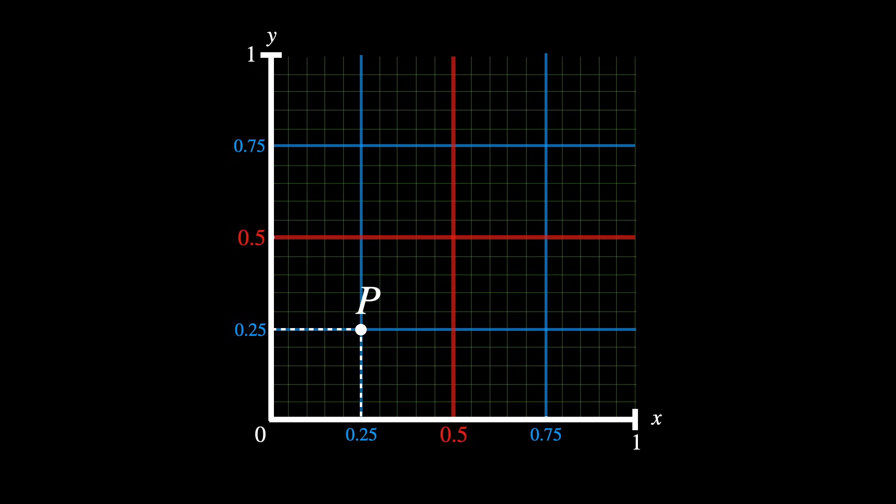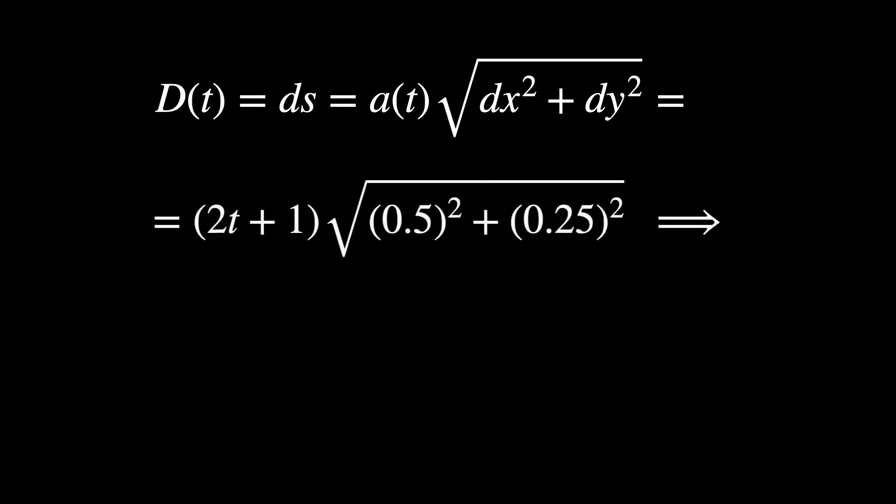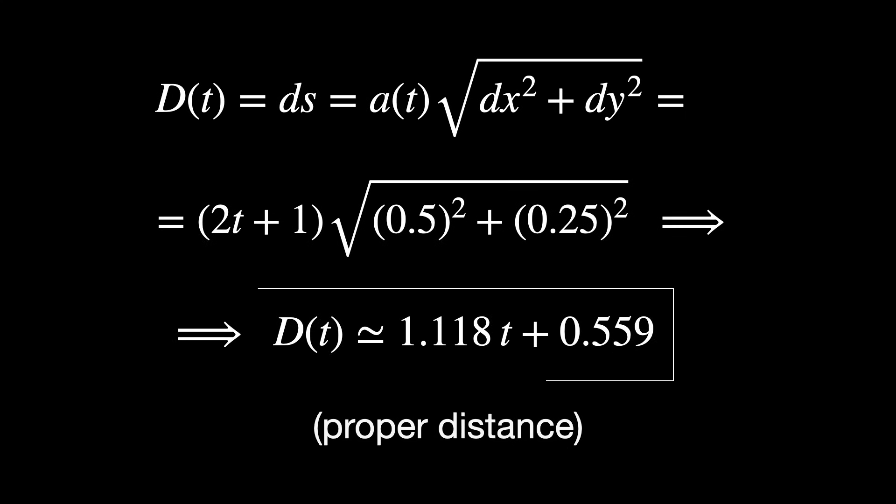Let's take two points, p and q. Their coordinate separations are dx equals 0.5 and dy 0.25. Therefore, the so-called proper distance between points p and q, when using the metric, is this. d of t, or ds in this case, is A of t times the square root of the two measures, dx and dy, each one of them squared. After calculating everything, we find this expression, which is linear.